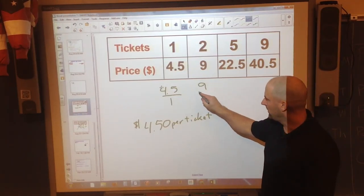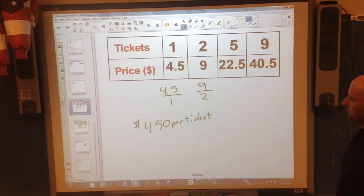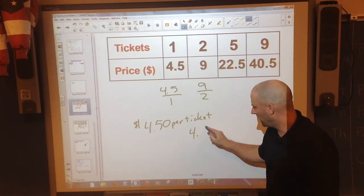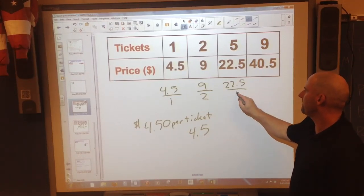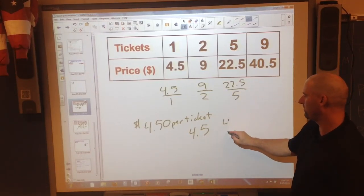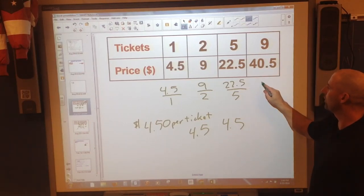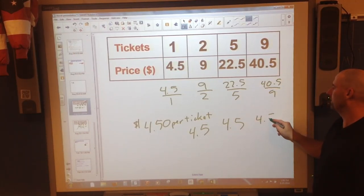Let me try that again. 9 divided by 2 is 4.5. 22.5 divided by 5 is 4.5. 40.5 divided by 9 is 4.5.